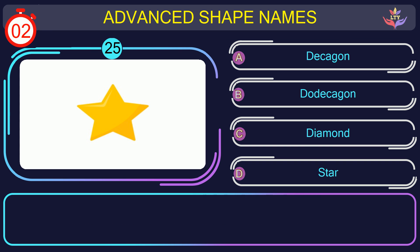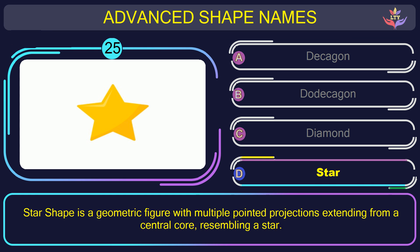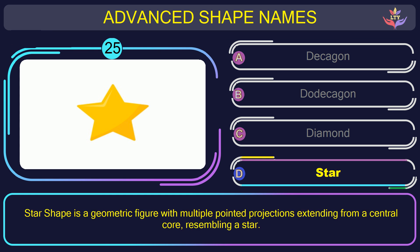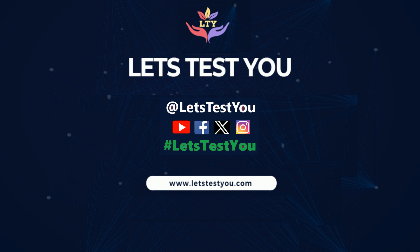Question number twenty-five. Could you figure out the name of the shape in this picture? The correct answer is option D. Star. Star shape is a geometric figure with multiple pointed projections extending from a central core, resembling a star. Thank you for visiting us — follow us on YouTube, Facebook, Twitter, and Instagram.